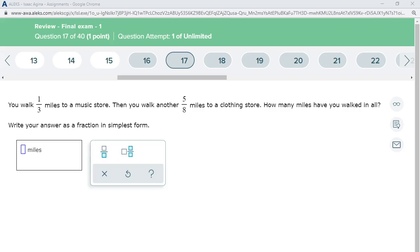For question 17, we want to look at the question and answer it. You walk 1/3 miles to a music store, then you walk another 5/8 miles to a clothing store. How many miles have you walked in all? Write your answer as a fraction in simplest form. For this question, all you need to do is add the two fractions because you're adding up your distances as you walk. So it's 1/3 plus 5/8.